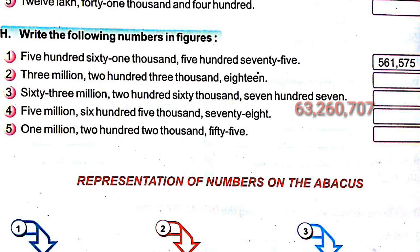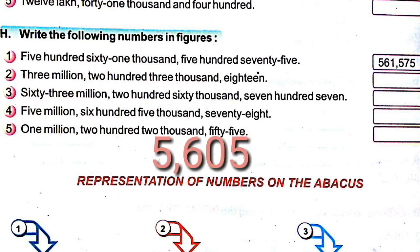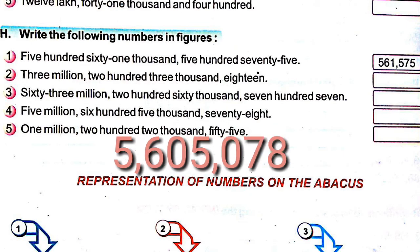Number four: 5 million 605 thousand 78. In millions period 5, in thousands period 605, and in ones period 78. So the number is 5,605,078.